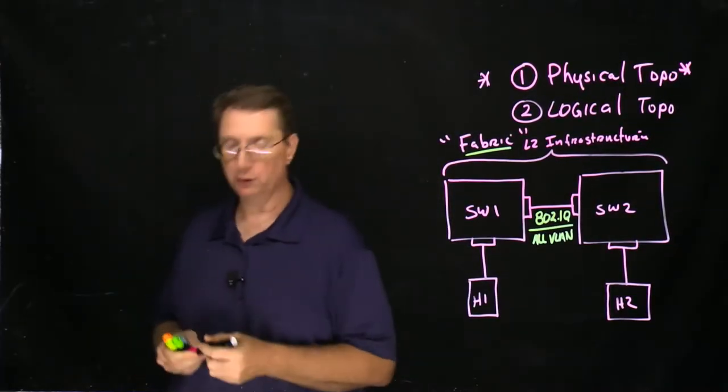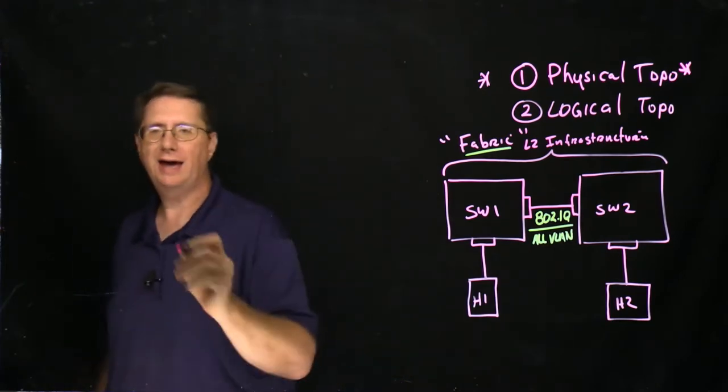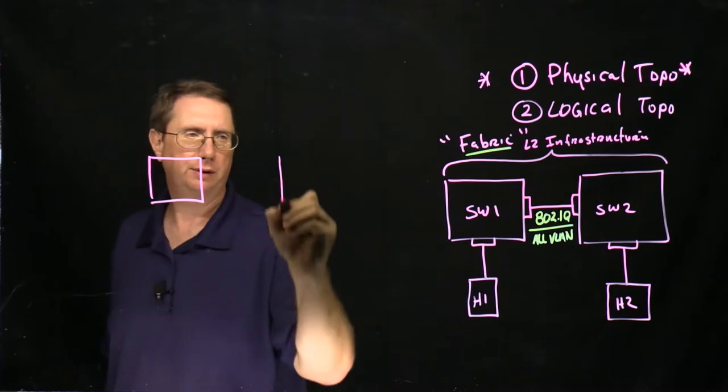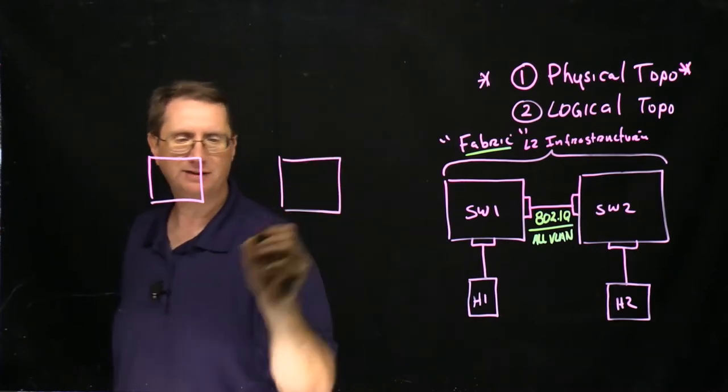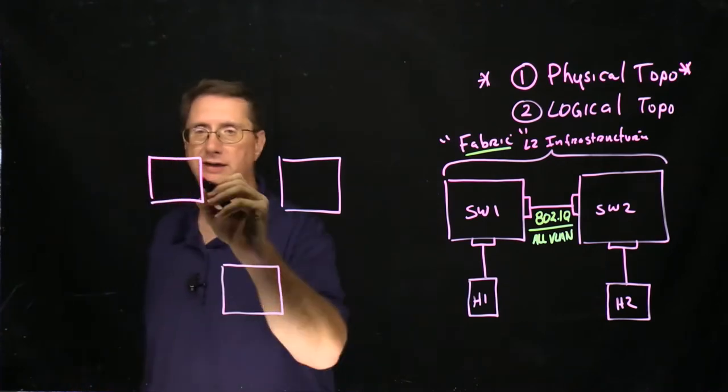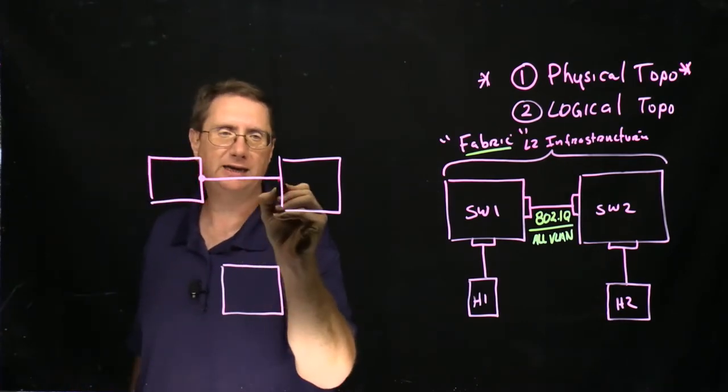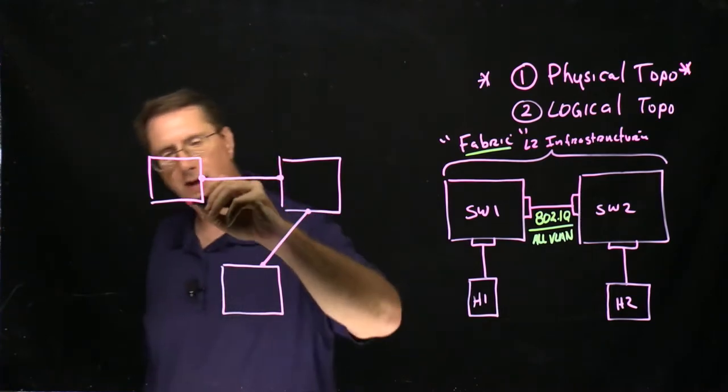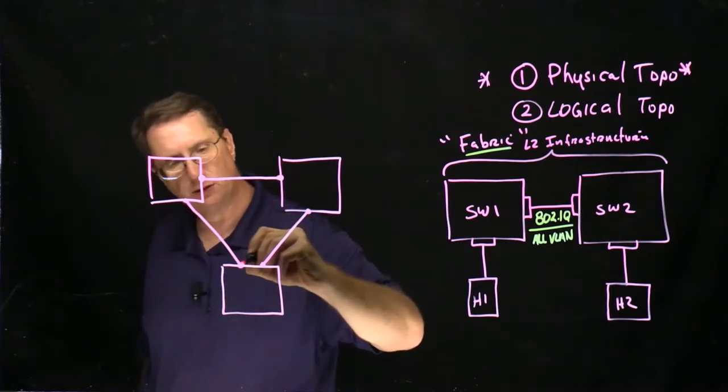All right, so now what we're going to do is we are going to put that configuration back on the light board. So what I have is I have the three switches. I'm no longer focusing on buildings, I'm focusing on the fact that I'm taking switches and I'm going to be connecting these switches together into a physical loop.